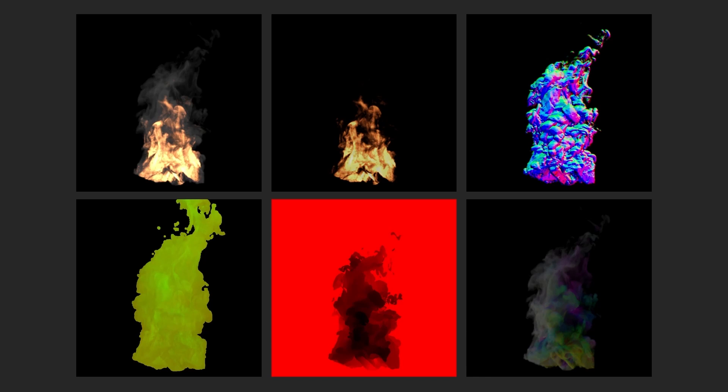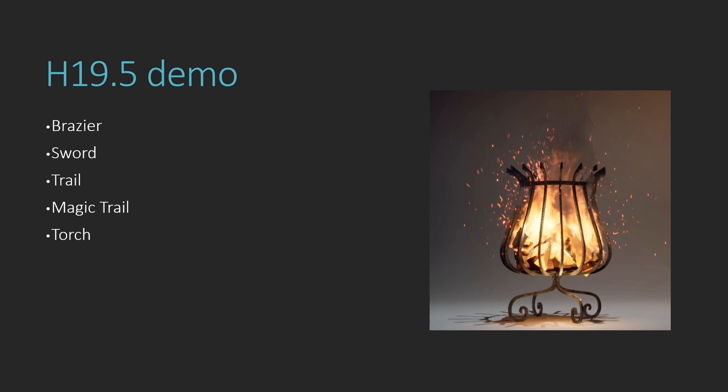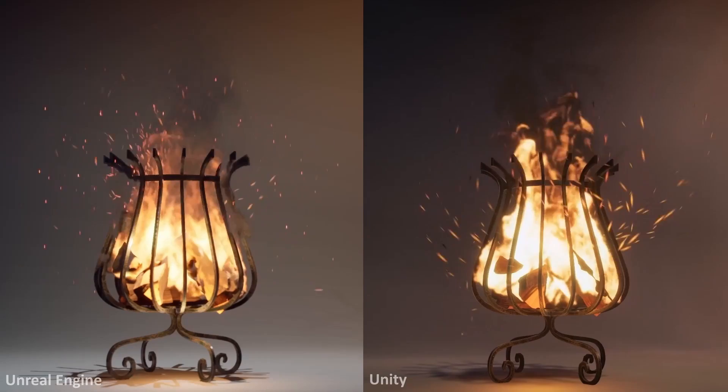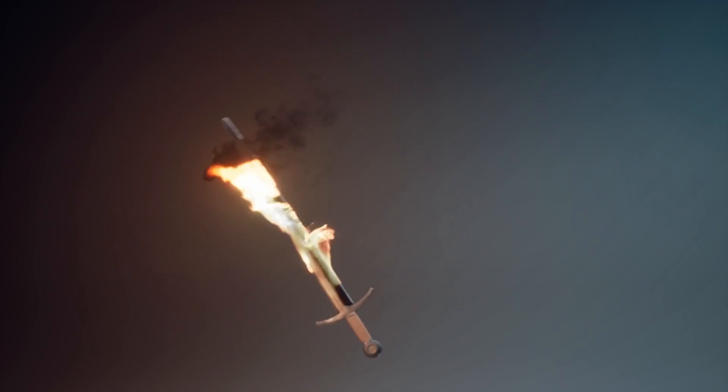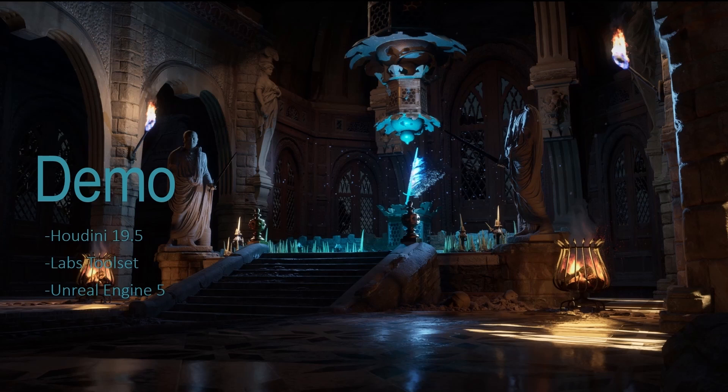In the Houdini 19.5 demo I built several examples: the brazier fire, flaming sword, particle trails, magic trails, and a torch. The brazier flames show a Houdini simulation brought into Unreal and Unity. There's also a trail shot for a gun or weapon. And the flaming sword swings from left to right with a nice flaming effect. Make sure you have Houdini, the Lab tools, and Unreal 5 installed — we'll need all of them.